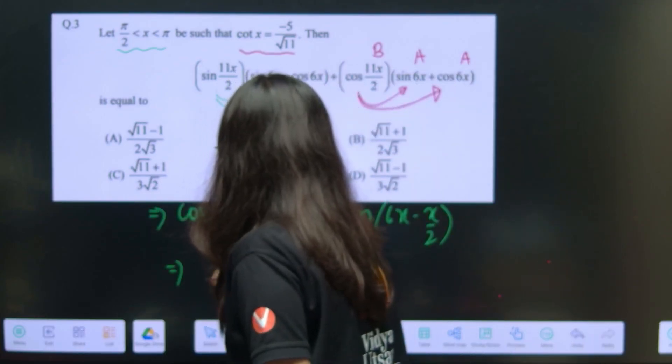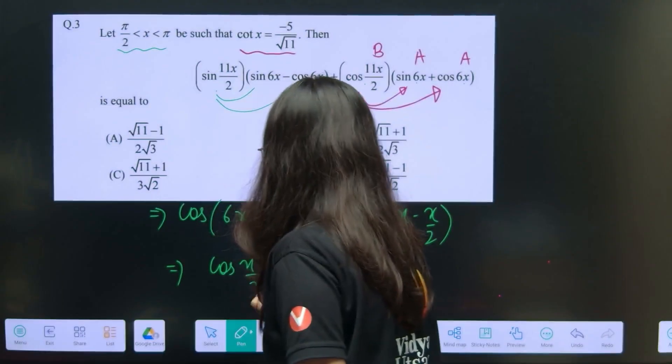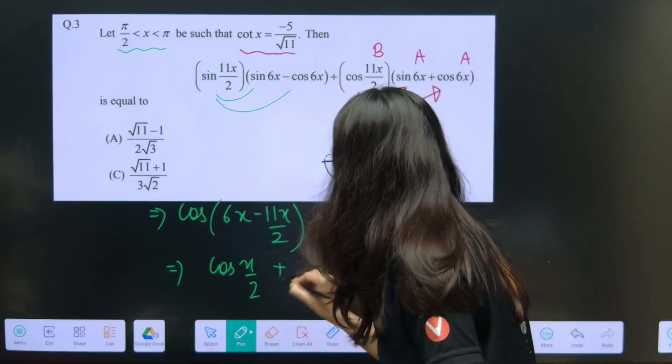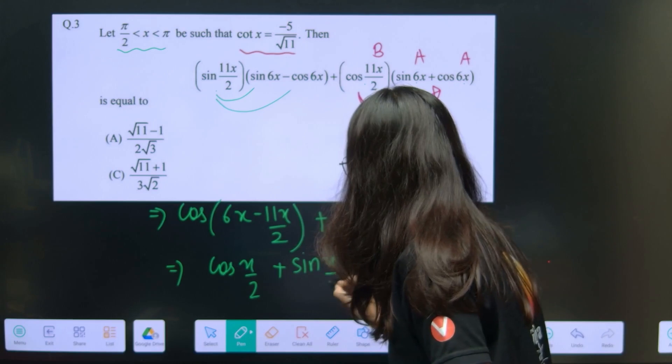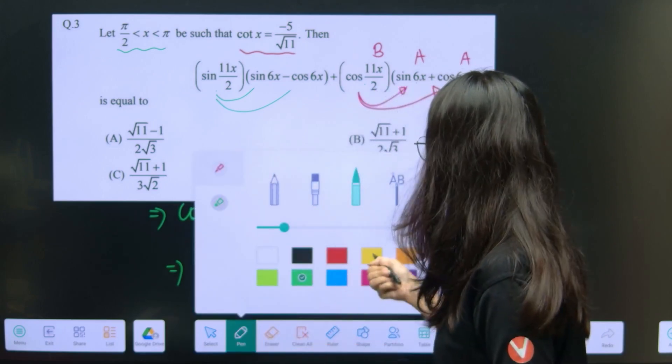What is a? 6x and minus b, if you solve it what will it become? So this is cos x by 2, 6 times 2 is 12 minus 11x by 2, plus sin x by 2.